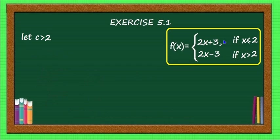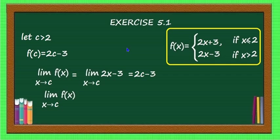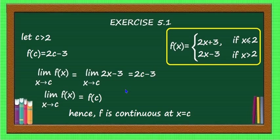Case 2: c > 2. When x > 2 the function is defined as 2x − 3, so f(c) = 2c − 3. The limit as x → c of f(x) equals the limit of 2x − 3 = 2c − 3. Since the limit equals f(c), f(x) is continuous at x = c. Thus f is continuous at every real number greater than 2.